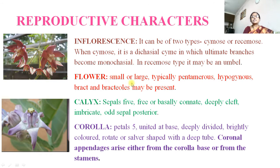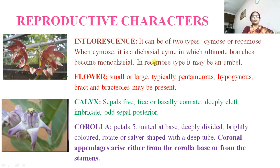Flowers are small or large, typically pentamerous, hypogynous (having superior ovary), bracteate and bracteolate may be present. The flower is hermaphrodite (bisexual) and complete because all four whorls are present: calyx, corolla, androecium and gynoecium. Calyx is made up of five sepals, which are free or basally connate, deeply cleft with imbricate aestivation.